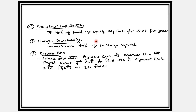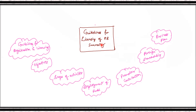अगली guideline है business plan के बारे में। RBI कहता है कि जब भी payment bank license के लिए apply करे, तो उसे अपना business plan और project report RBI के पास जमा करानी होगी — कि किस तरह से payment bank अपने उद्देश्यों को पूरा करने वाला है। यह business plan license की application के साथ submit करना अनिवार्य है। ये हैं वो guidelines जो RBI ने payment banks के लिए issue की हैं।